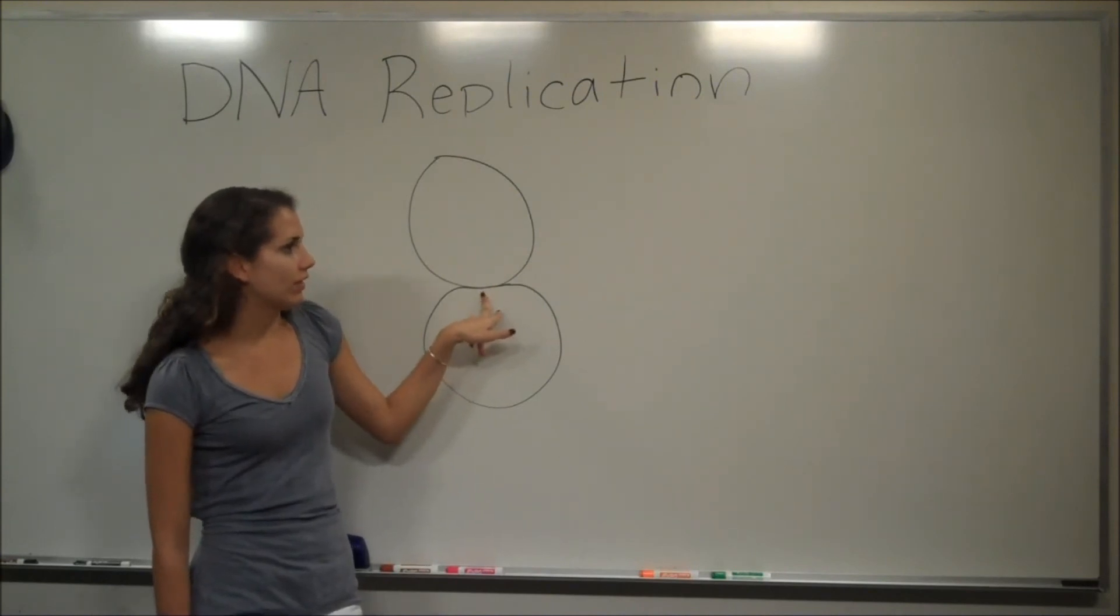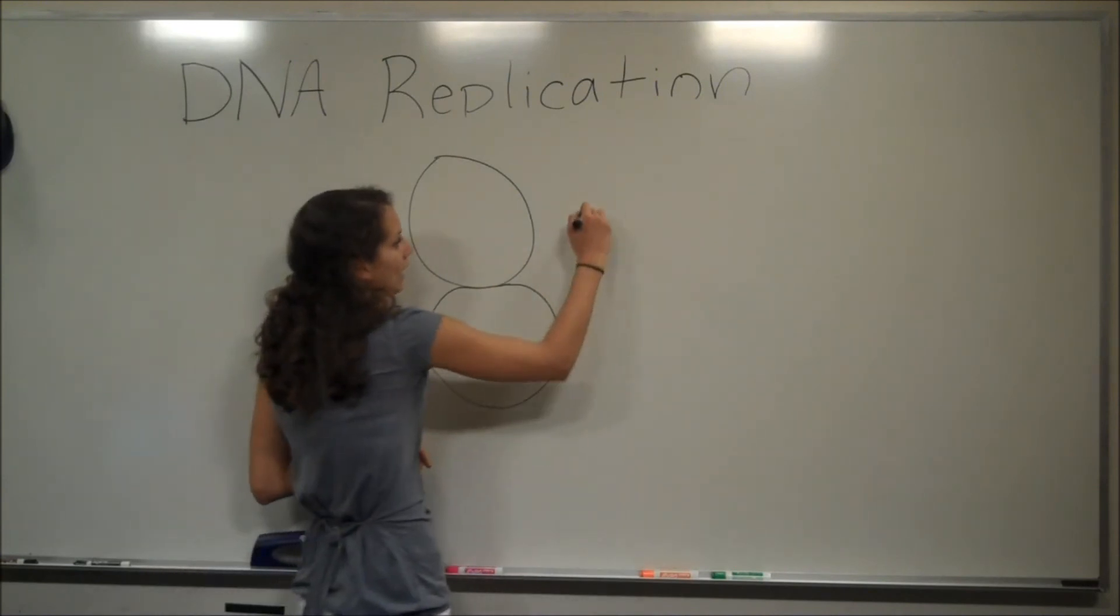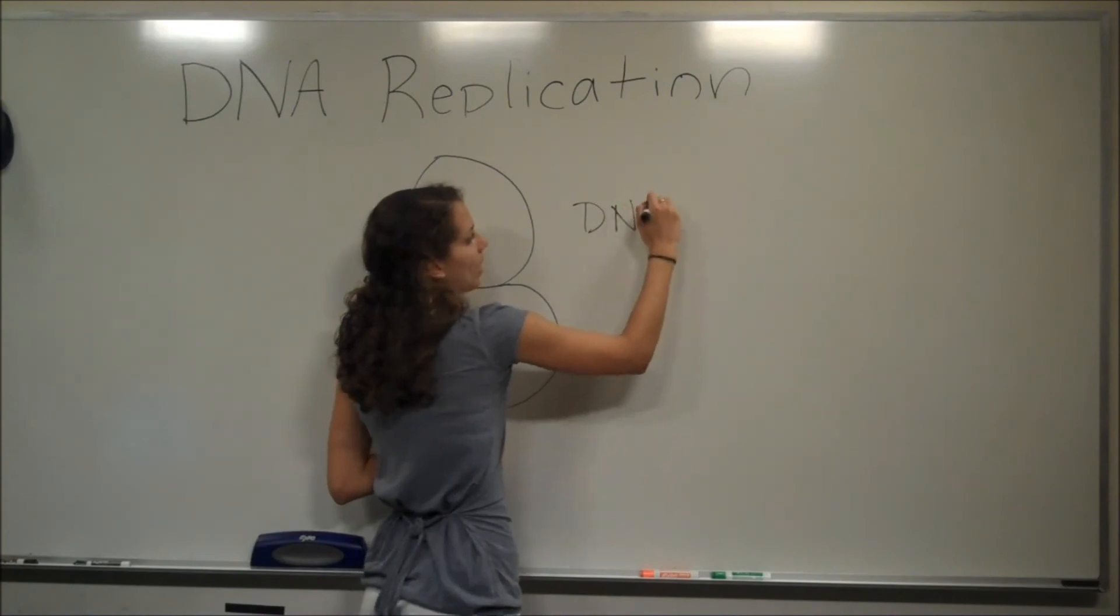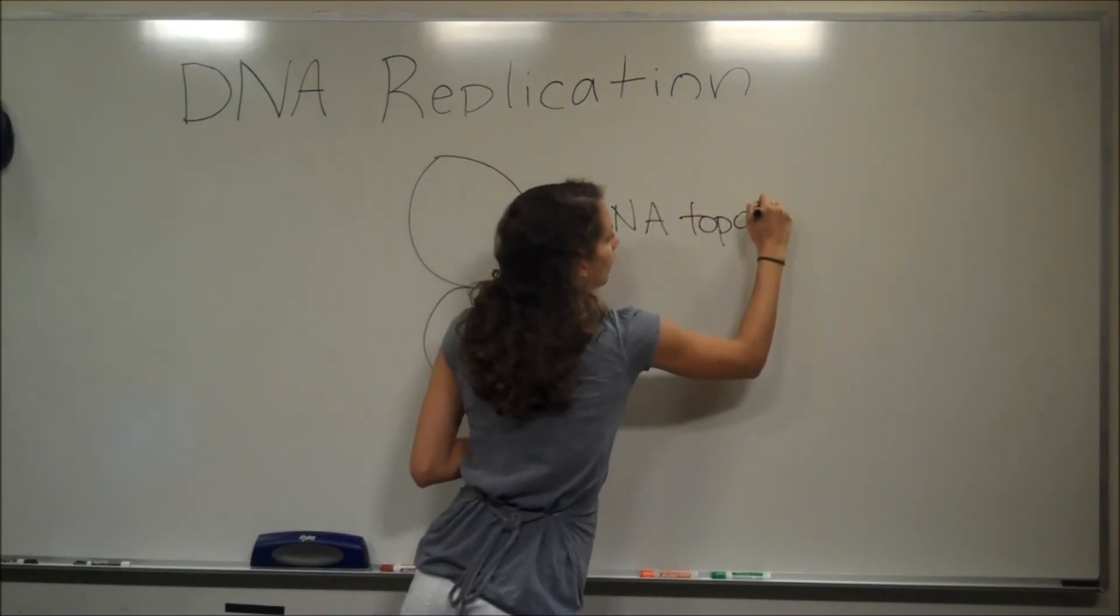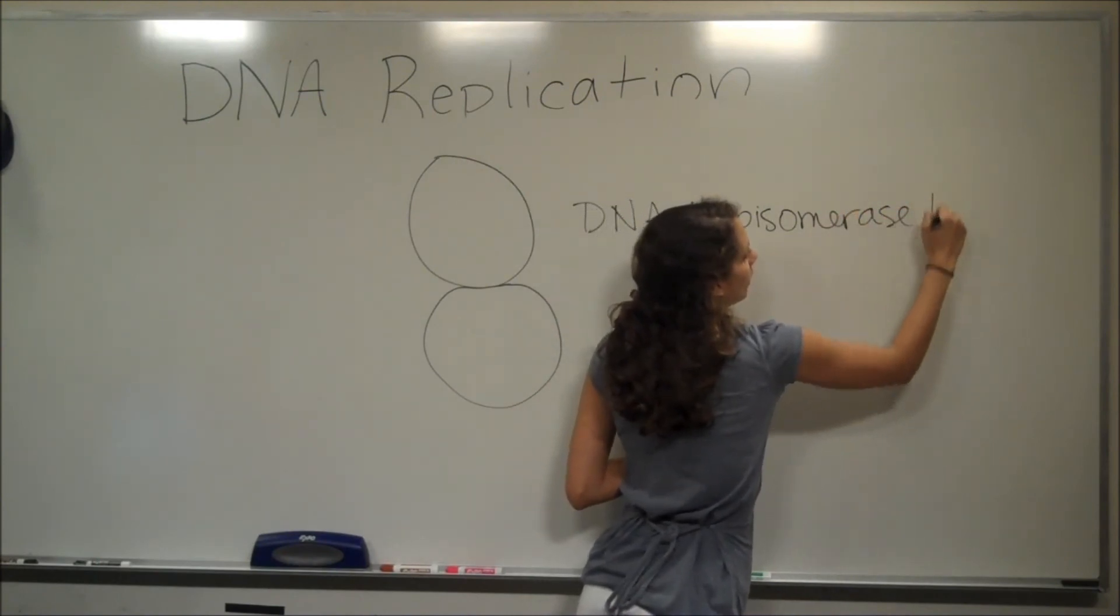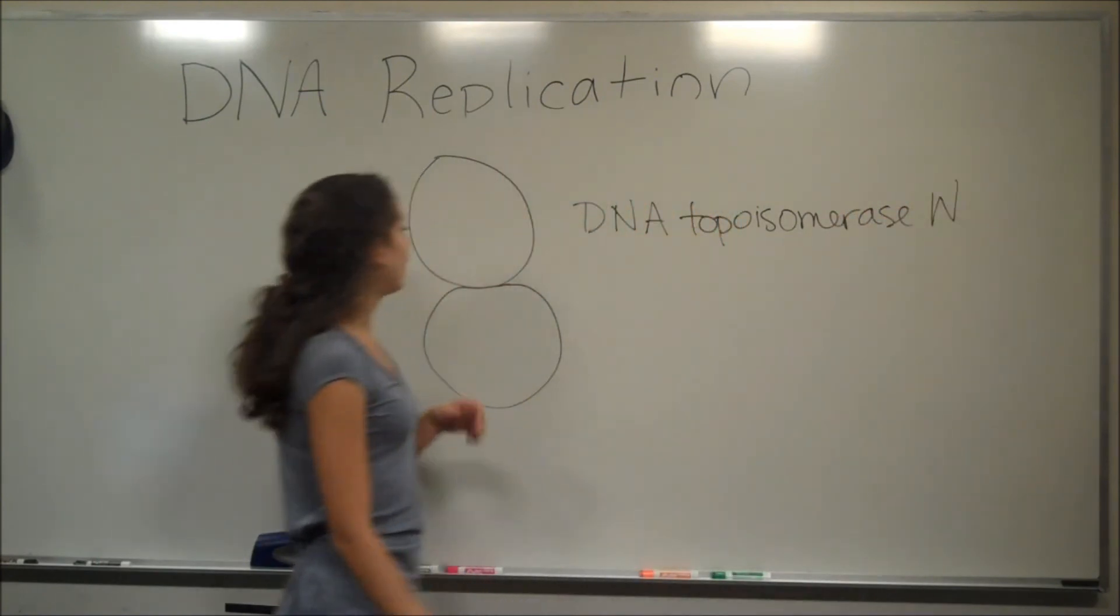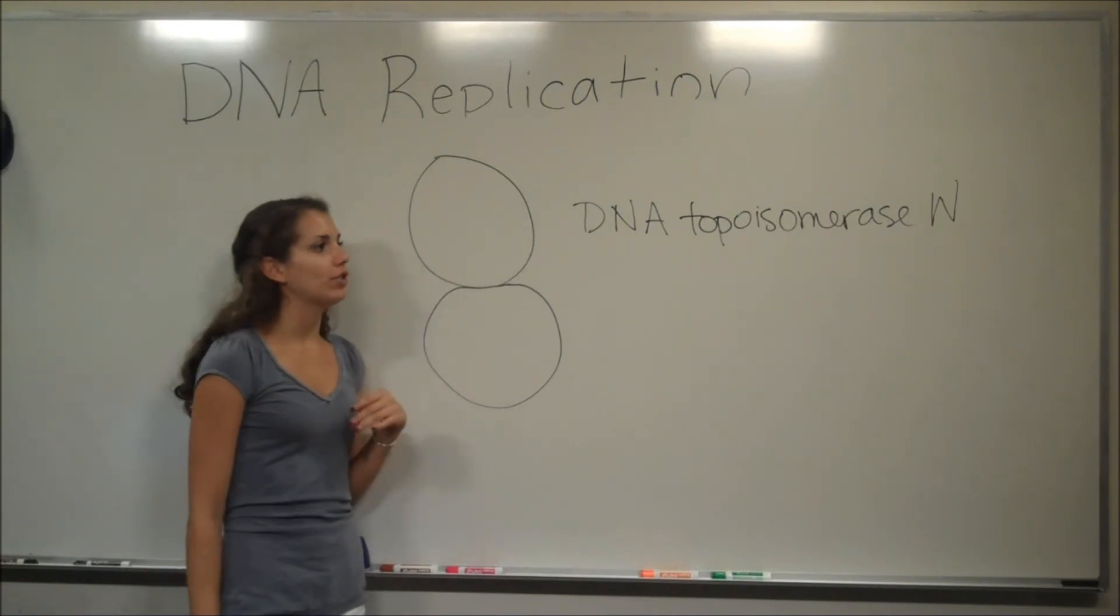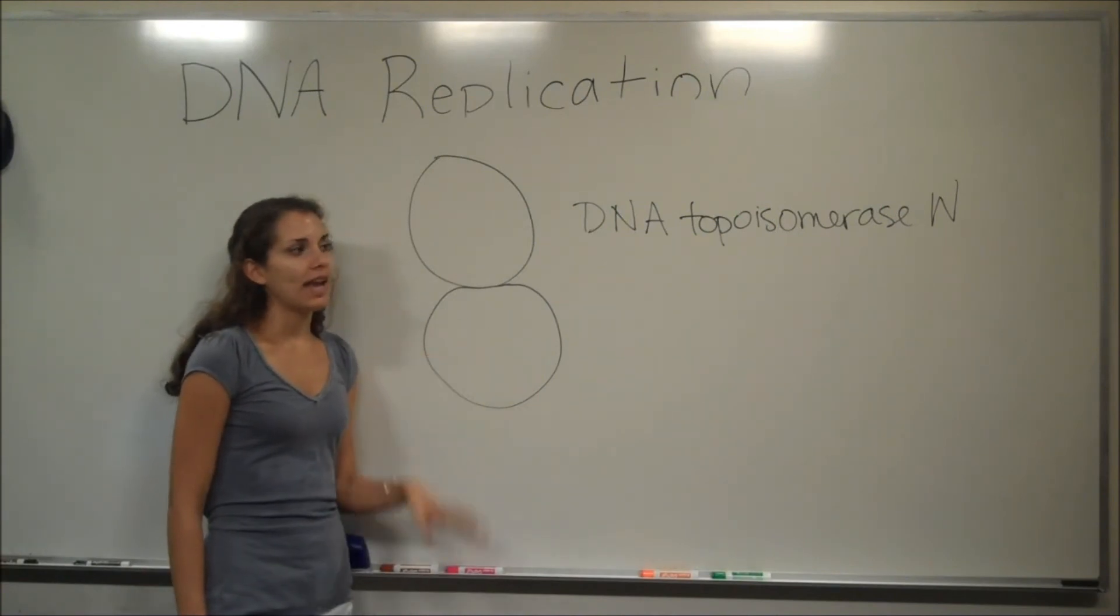Here, this is where it's just finishing up. So DNA topoisomerase 4 is responsible for separating the parent and daughter chromosomes from each other, and we call these catenated. So DNA topoisomerase 4 comes in and separates the catenated chromosomes.